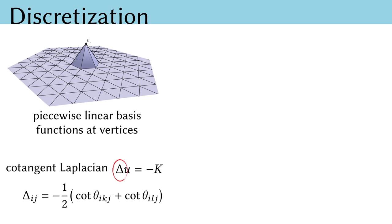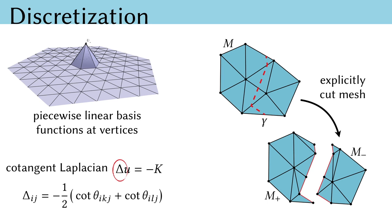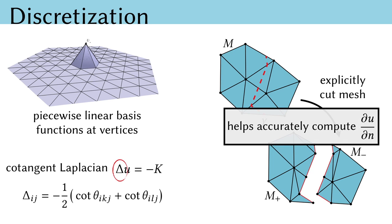One interesting challenge that arises in our case is that we need to solve these Poisson problems on various cut versions of the input mesh. To evaluate these systems, we explicitly cut the input mesh and temporarily construct new meshes with boundary introduced along the cut, on which we solve these Poisson problems. This is important to accurately estimate the partial derivative at the boundary, which is a key component of our flow. We found that simply using finite differences was not sufficiently accurate.